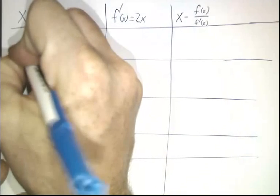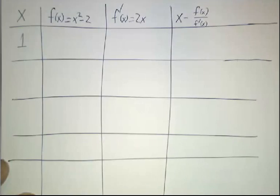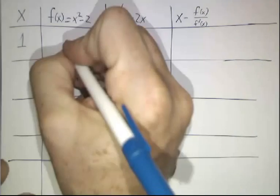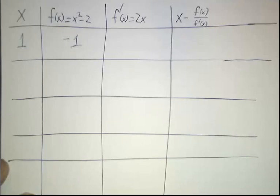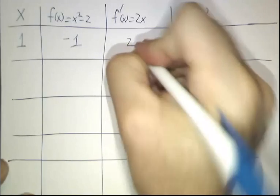Let's take, as our first guess, something really rough. We're going to guess x equals 1. That's not all that close to the square root of 2, but it's a good enough starting point. Well, then f(x) is 1 squared minus 2. That's negative 1. And f prime of x is 2.